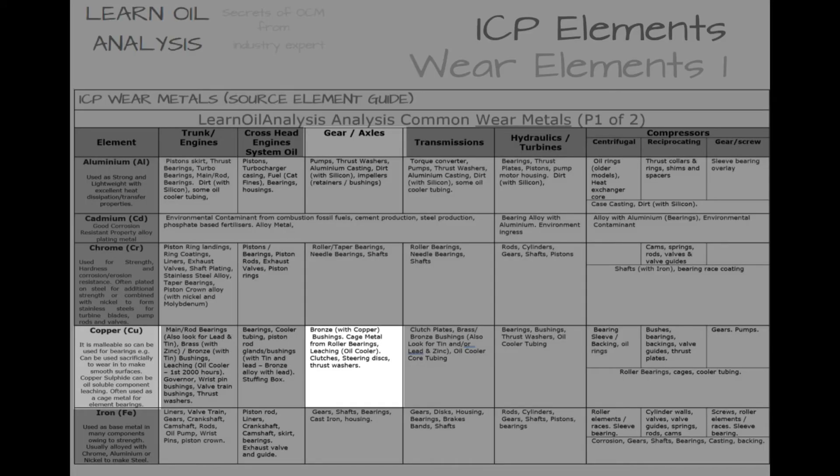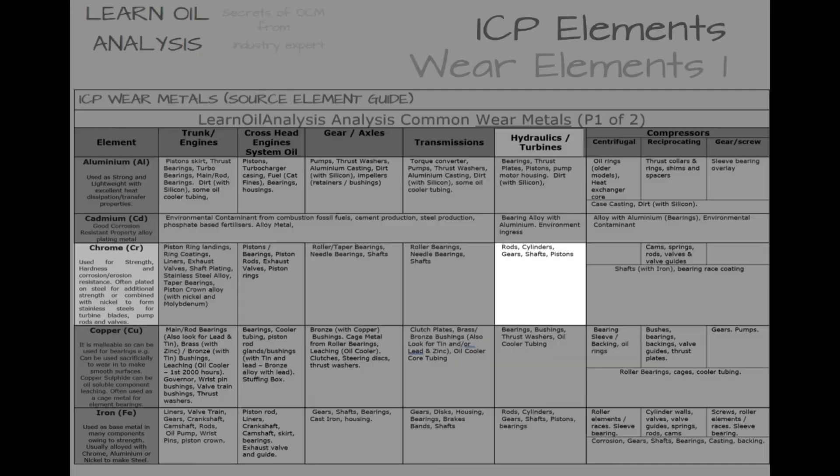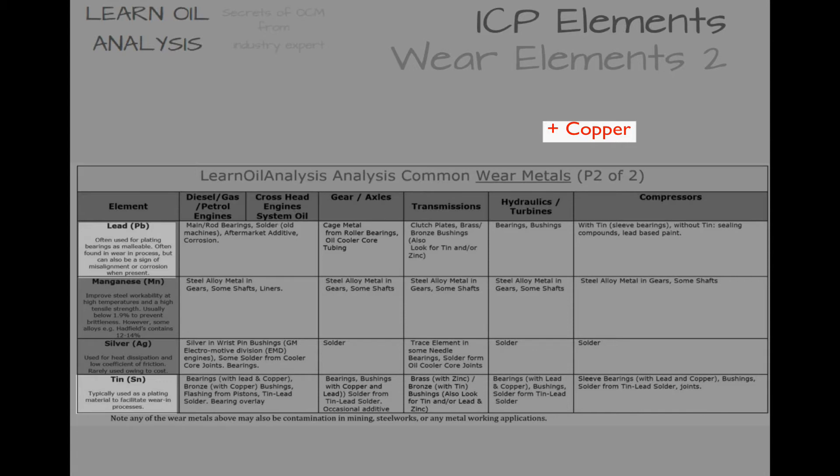Copper, on element bearings with a metal cage, tends to be cage wear if the only high element present, which could be a misaligned bearing. Chrome on hydraulics, on an excavator or digger, suggests wear to those nice shiny chrome-plated rods, which could be caused by a seal failure. Lead and tin, when also found with copper in an engine, suggest bearing wear.